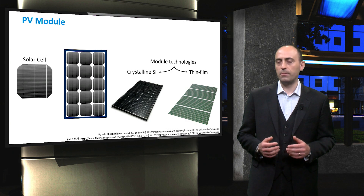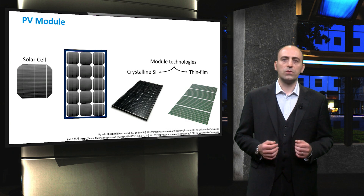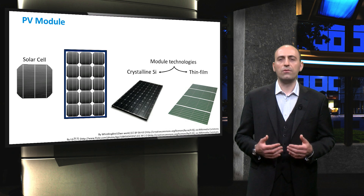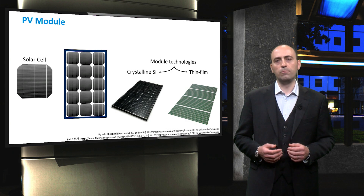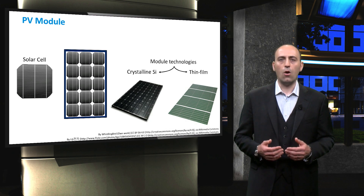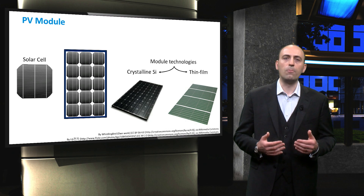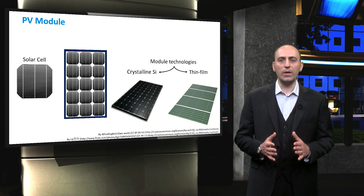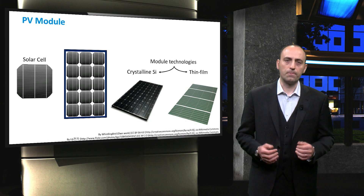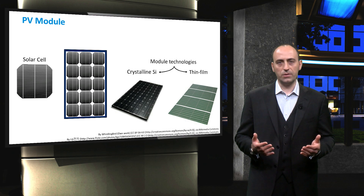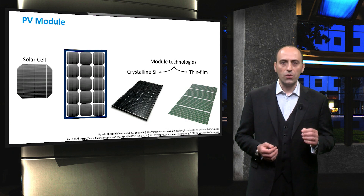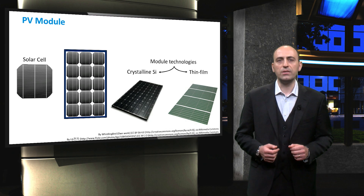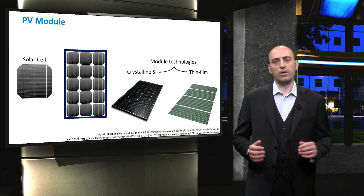Of course, they have different market purposes. Thin film modules can be made flexible and are therefore suitable for niche markets related to building integrated photovoltaics, or more generally for environmental integrated photovoltaics. After solar cells have been connected together, modules are formed by encapsulating the cells with different materials. The encapsulant is added to protect the cells from environmental influences. Finally, concerning large-scale generation of electricity, multiple PV modules are combined to form an array.